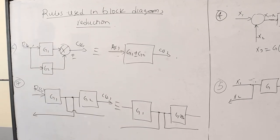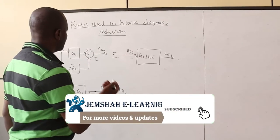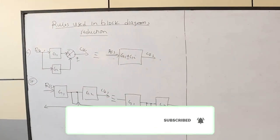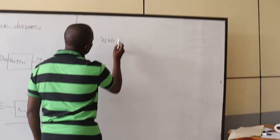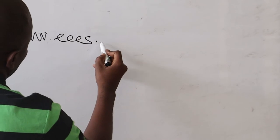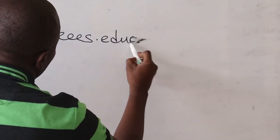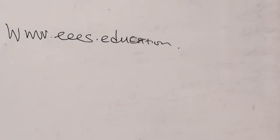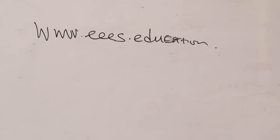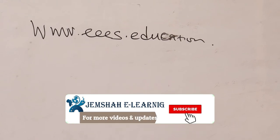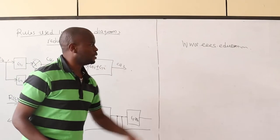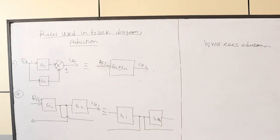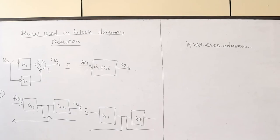Those are the rules used to reduce block diagrams to canonical form. For more materials on block diagrams, reduction methods, and canonical simplification, you can visit www.ees.education.